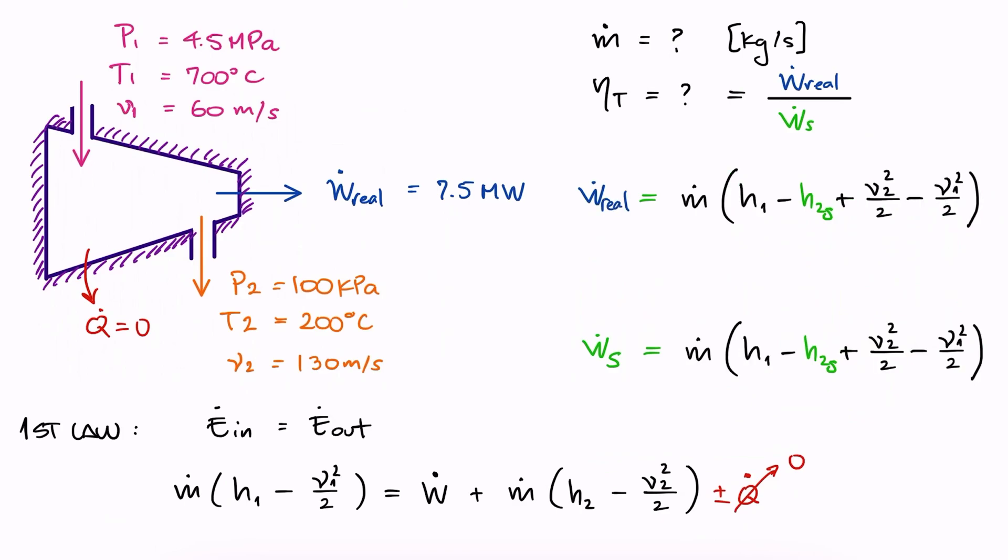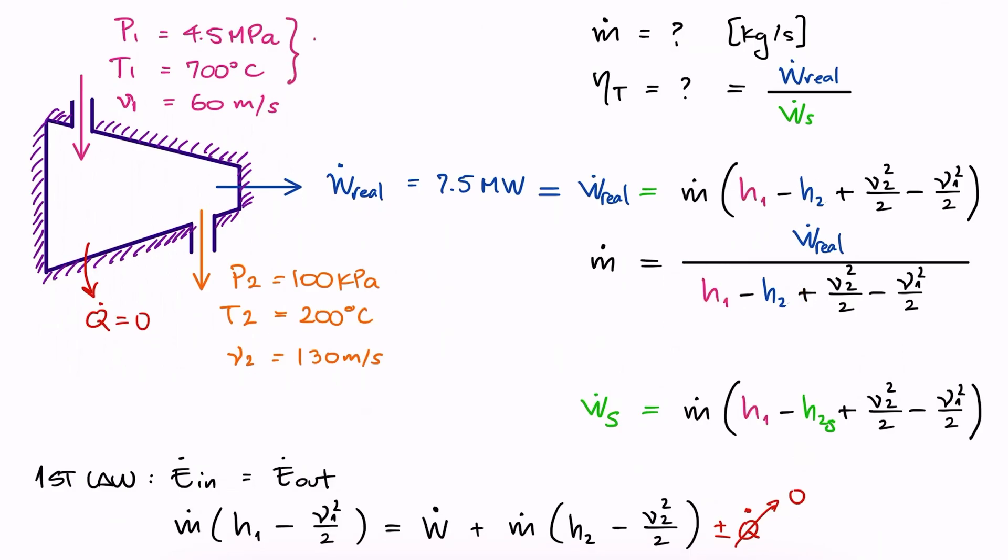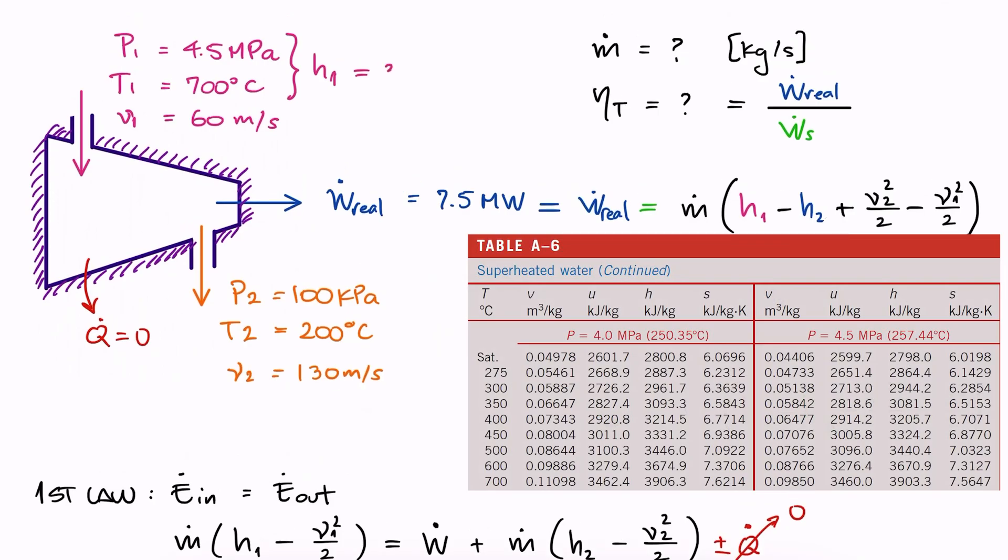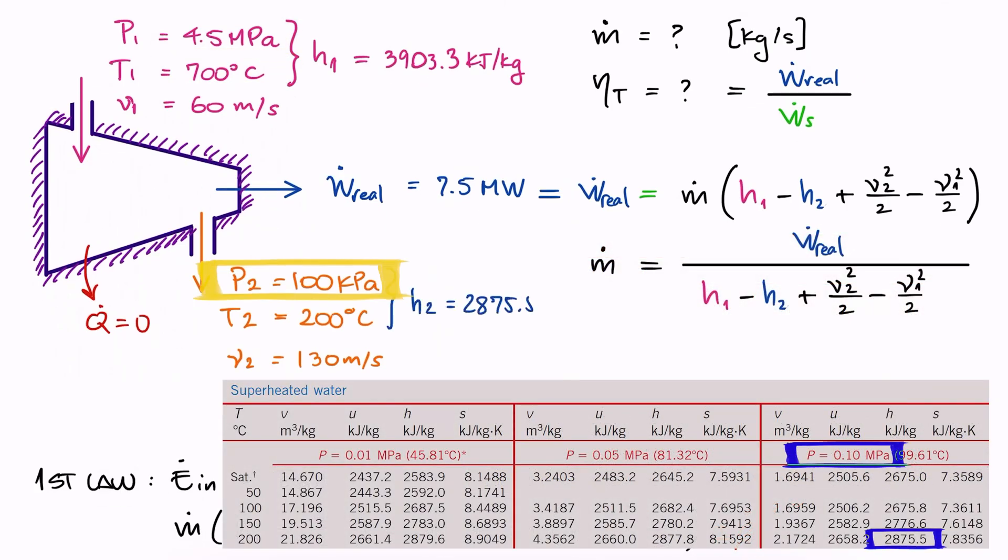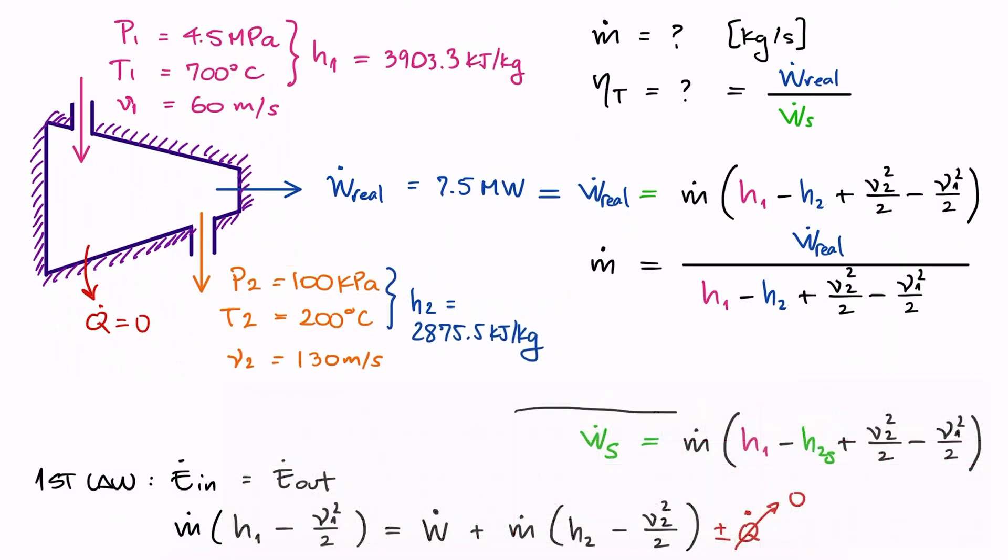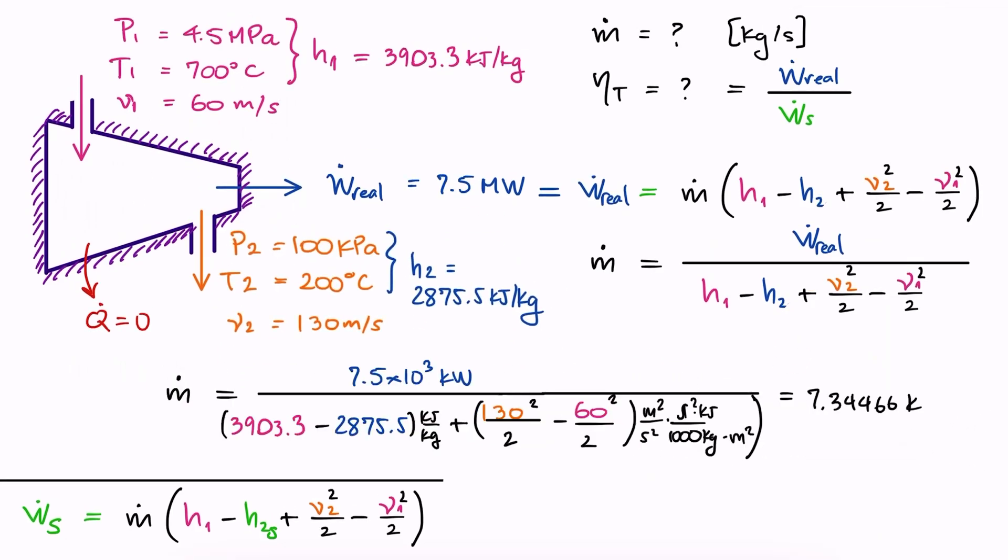Since this expression for actual work output is practically the same, except for H2 instead of H2S to calculate the actual work, not the isentropic work, and we have the work value for the actual turbine, we can solve for the mass flow rate. The two missing terms here are H1 and H2, but since we have pressure and temperature information, we can use the steam tables to find H1 for P1 and T1, and then do the same to find H2 for P2 and T2. We substitute the values for specific enthalpy, for velocity, knowing that we need to correct for units, and the work, and this way we find the mass flow rate.